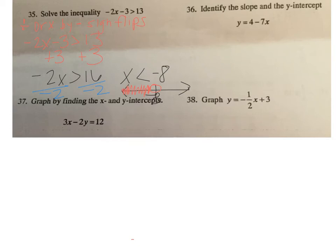Number 36, identify the slope and the y-intercept. Remember that our slope-intercept form is y equals mx plus b. The y-intercept is where it crosses the y-axis. The slope is how steep the line is. And the slope is the number in front of the x. So in this case, my slope is the negative 7. And my y-intercept is my 4.